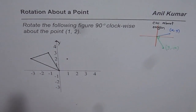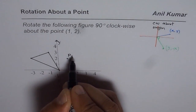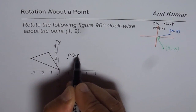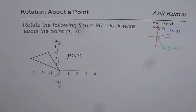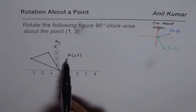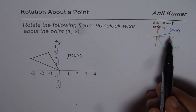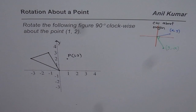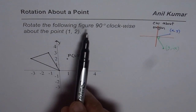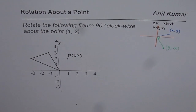Now the thing is we want to rotate about another point. Let's call this point P, whose coordinates are (1, 2). We are not rotating about the origin — we are rotating about the point P. That's the real question. But we will take help of this concept. The question says: rotate the following figure 90 degrees clockwise about the point (1, 2).